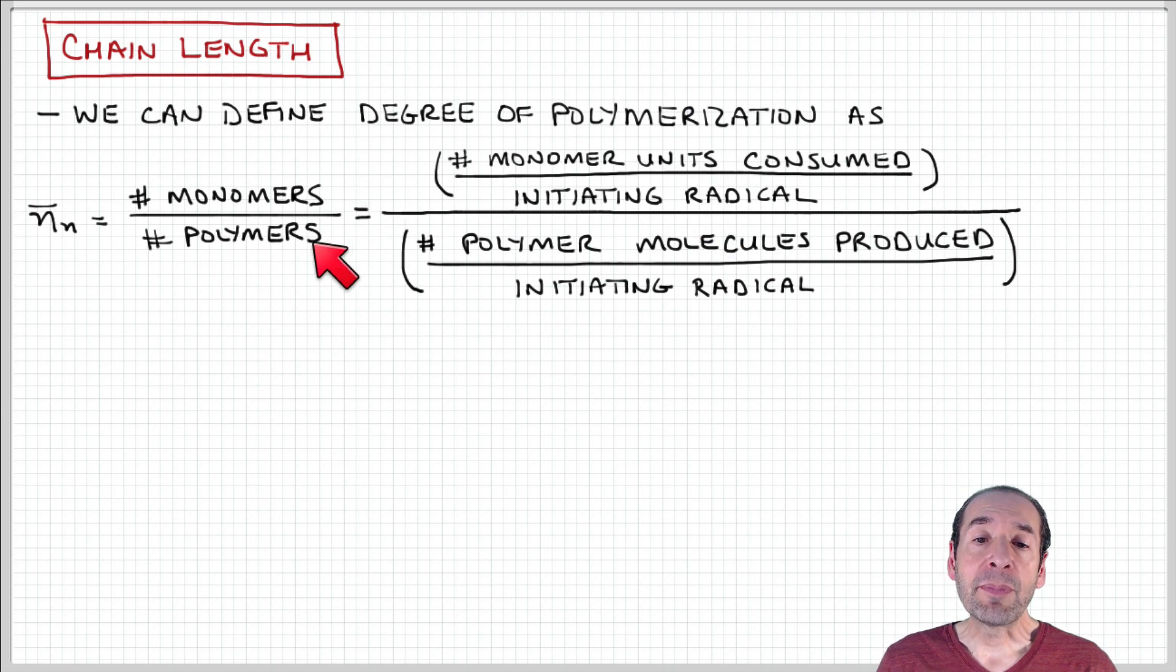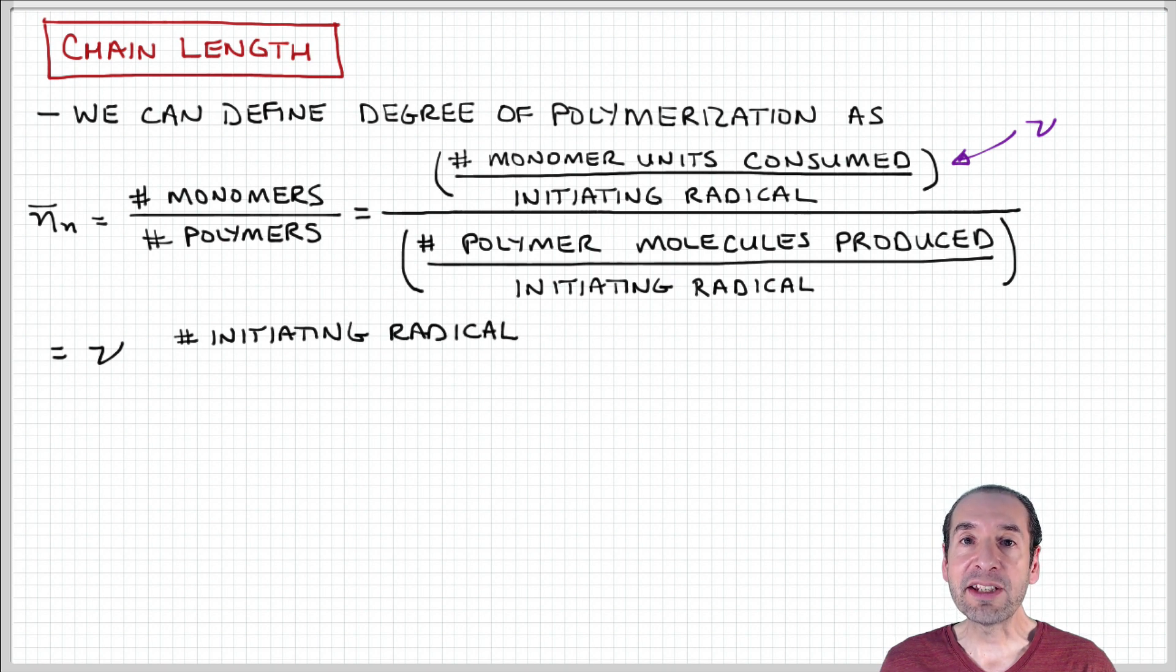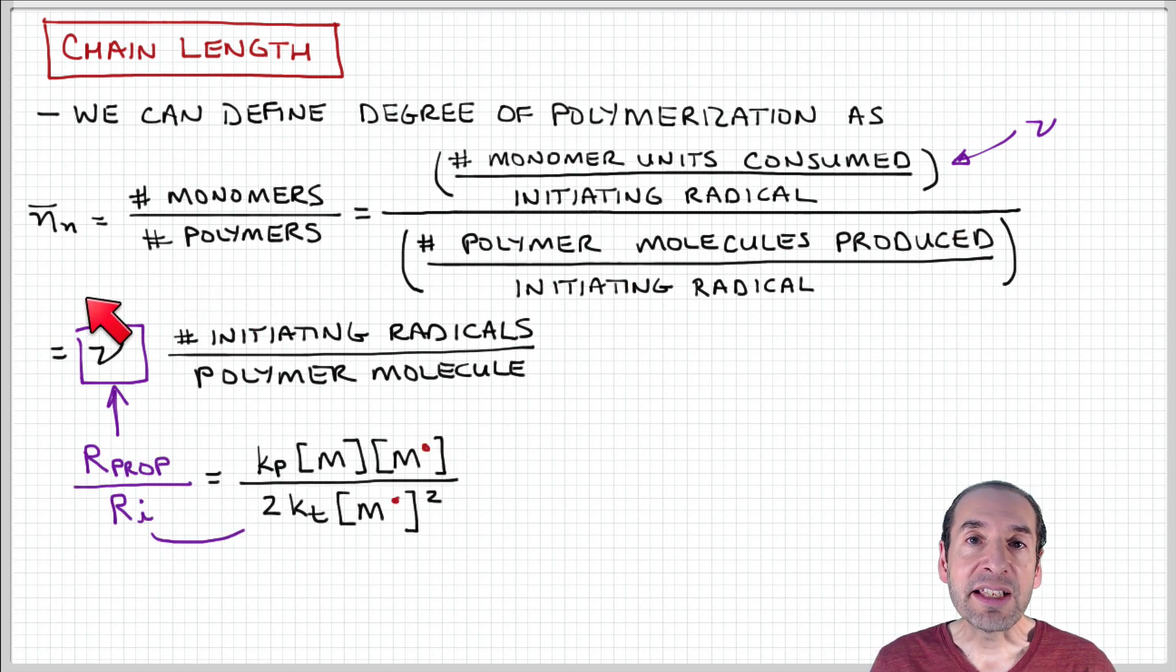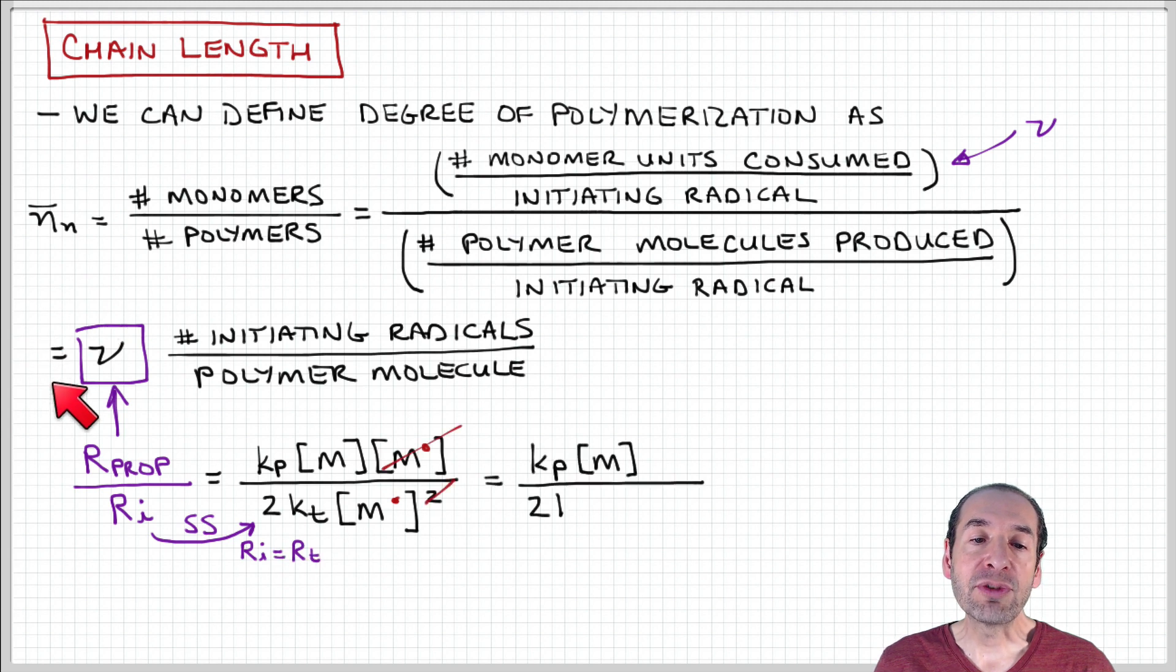The number of polymers in the denominator, I'm going to express as polymer molecules produced per initiating radical. I've taken these quantities and expressed them on a per initiating radical basis, expressing them in terms of consumption and production to connect with our kinetic model. This term in the numerator, I'm going to abbreviate using this shorthand Greek letter ν (nu), and then I'm going to invert the term in the denominator and multiply by it. So the number average degree of polymerization is ν times the number of initiating radicals per polymer molecule.